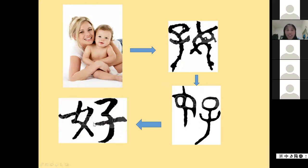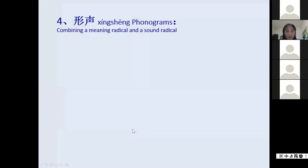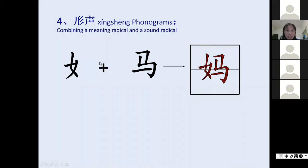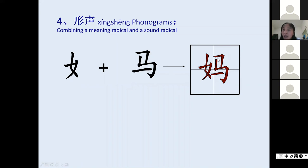The last way is phonograms - xíngshēng characters. As I mentioned, more than 80 percent of Chinese characters are this kind. One part is the meaning radical and the other part indicates the sound. You can see the female radical in this character, so the meaning is related to a woman. The right part tells you the sound - this character is pronounced mā (first tone), meaning mother.